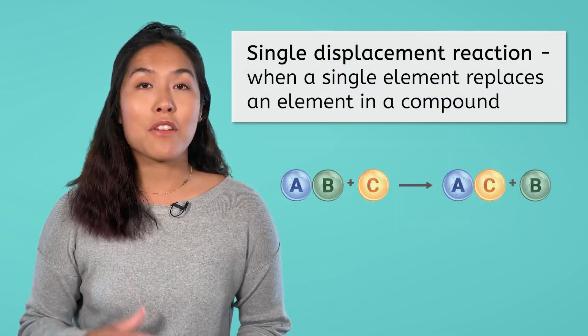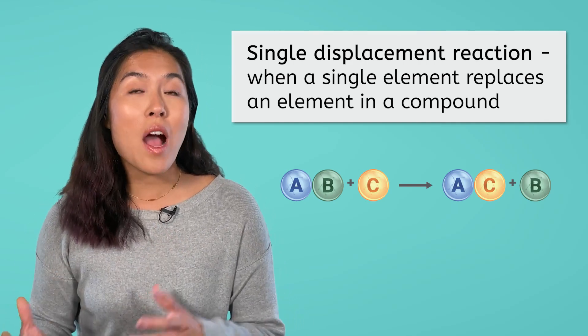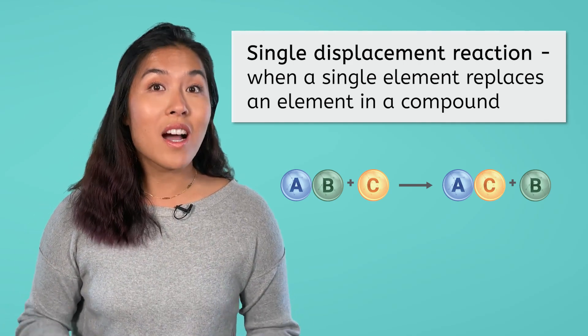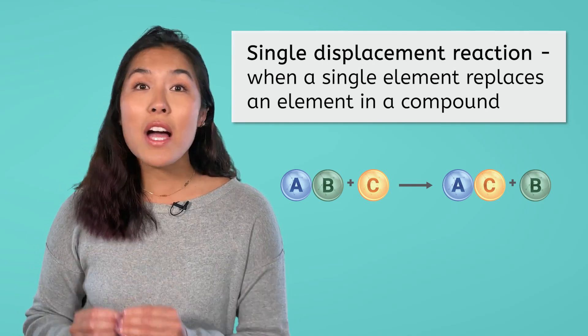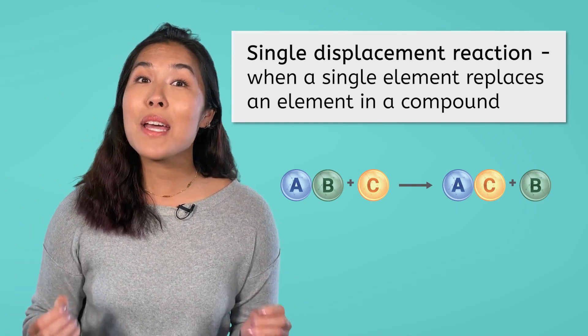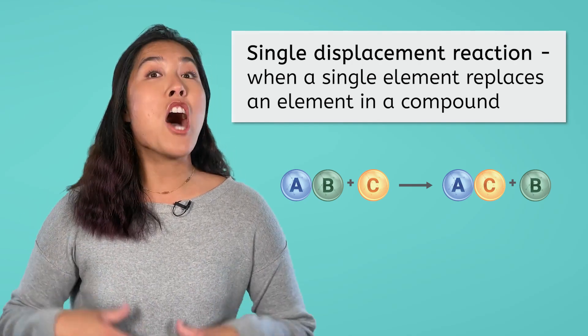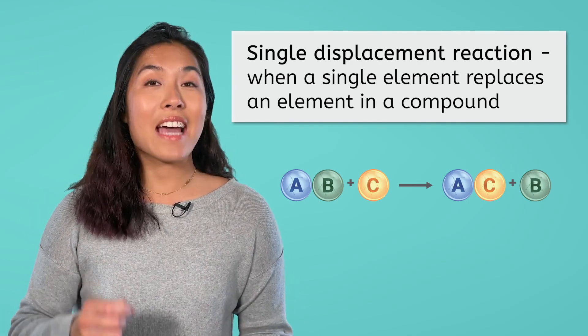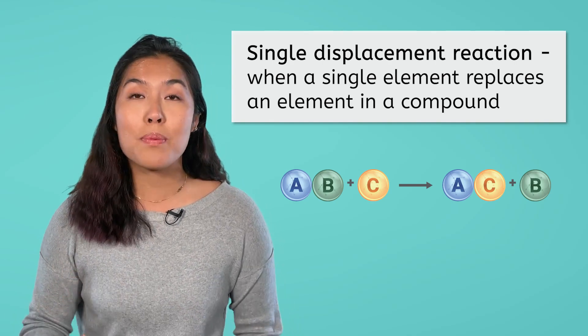In these reactions, there is an ionic compound made of metals and nonmetals, and it reacts with either a metal element or a nonmetal element. During the reaction, the single element switches places with the same type of element in the ionic compound to form a new ionic compound and separate element. It's important to remember that like replaces like.